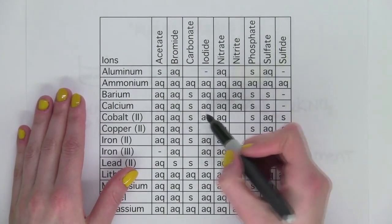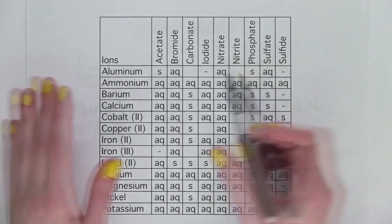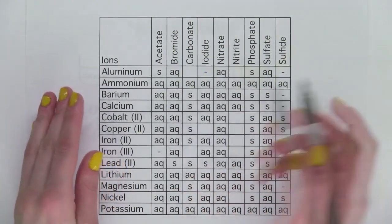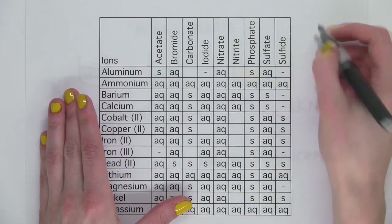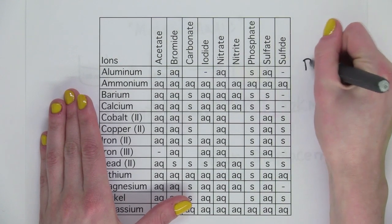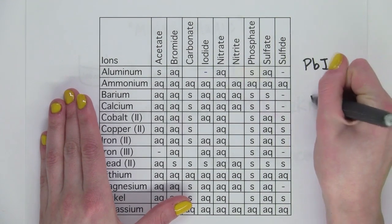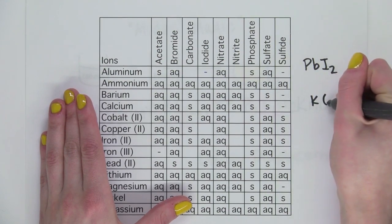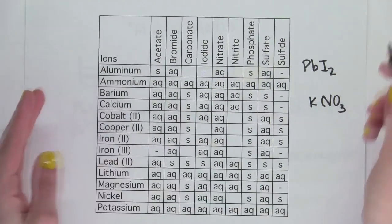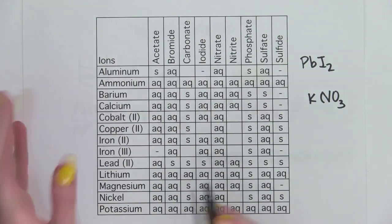If it's soluble in water, there's an AQ for aqueous on the chart. And if it's insoluble in water, there's an S for solid. So our two compounds that we want to look at are lead iodide and potassium nitrate. So let's take a look. Potassium nitrate.